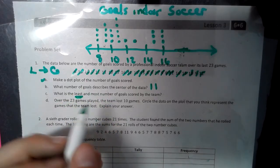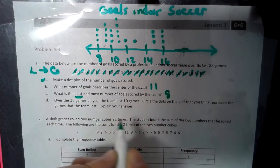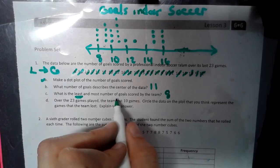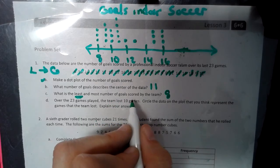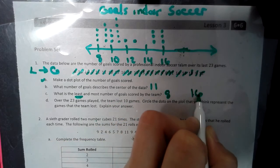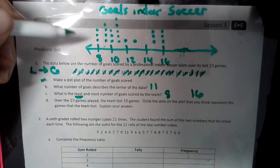The least amount, obviously, is our lowest dot, which is 8. And the most number of goals scored by a team, which would be 16. And that is how you make a dot plot.